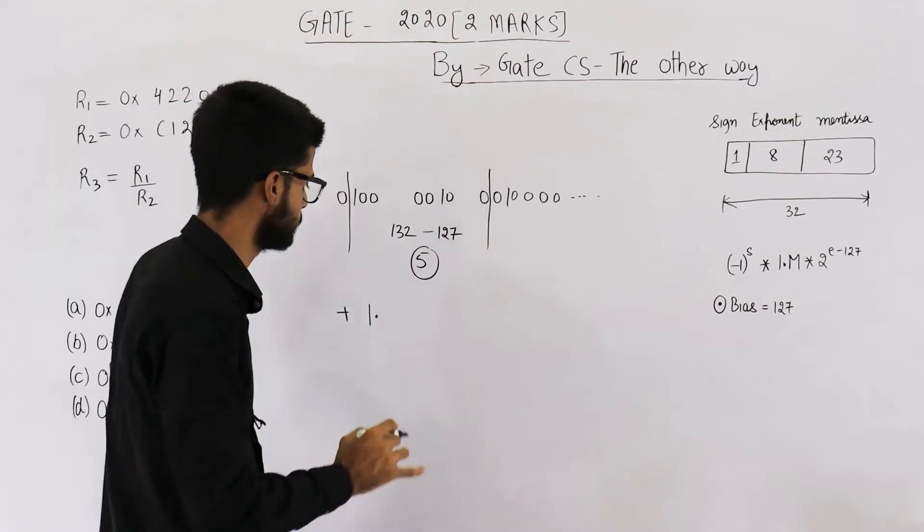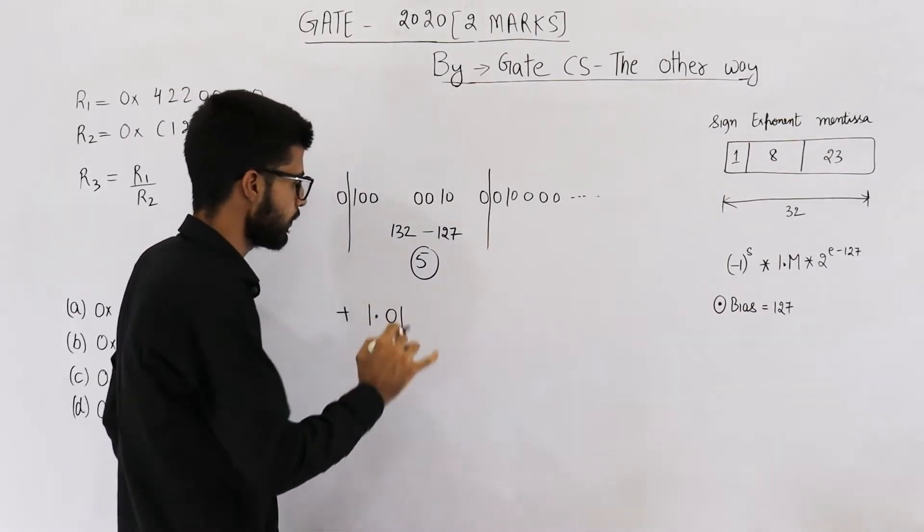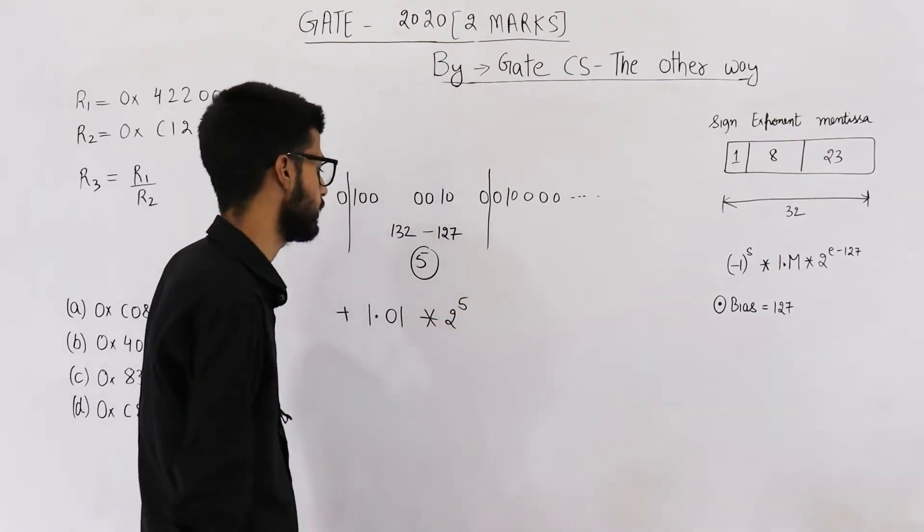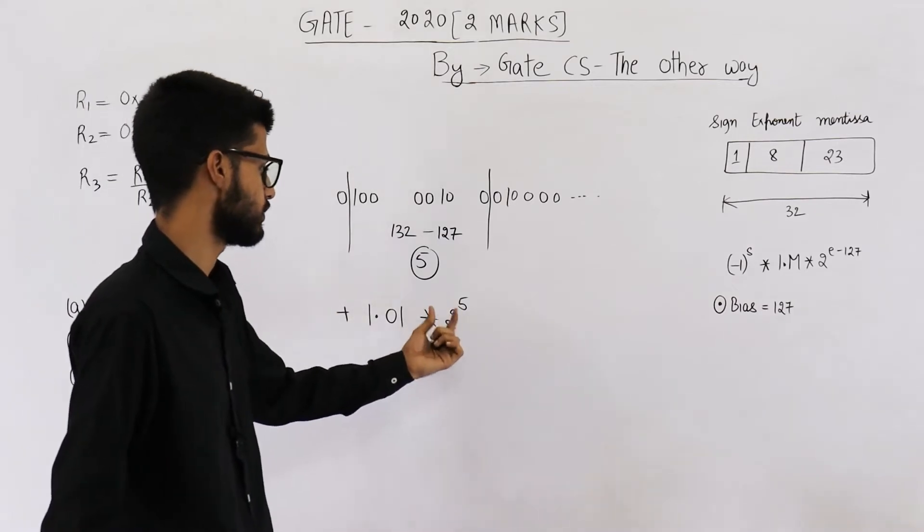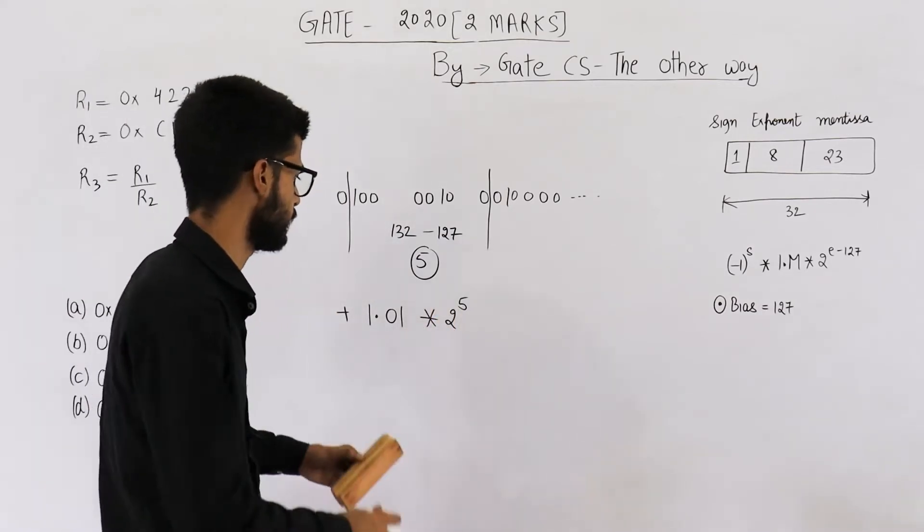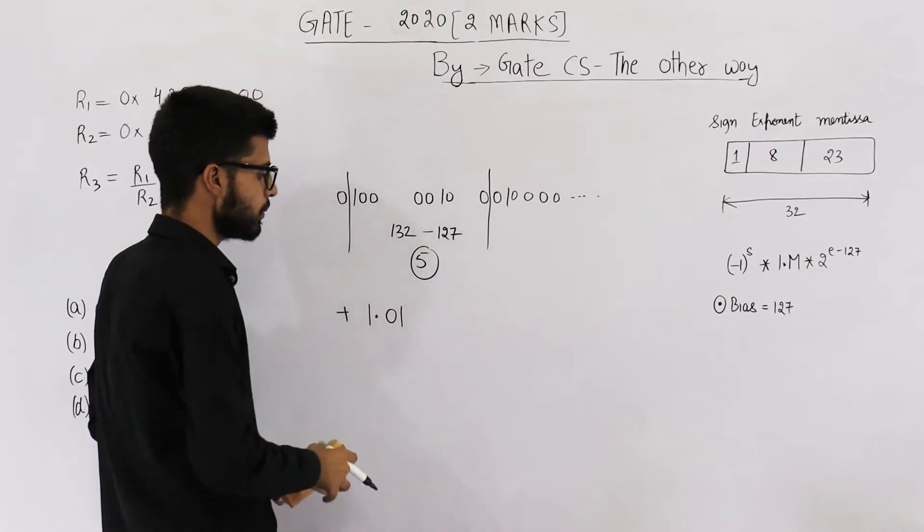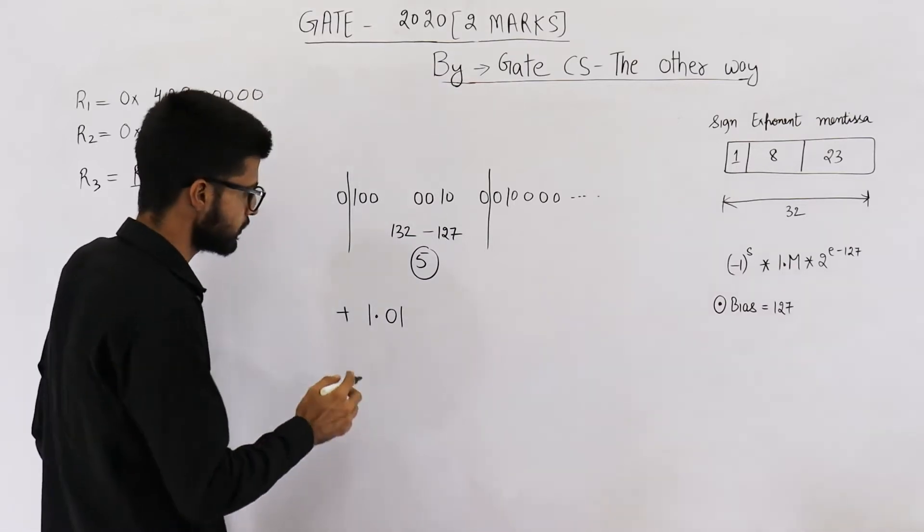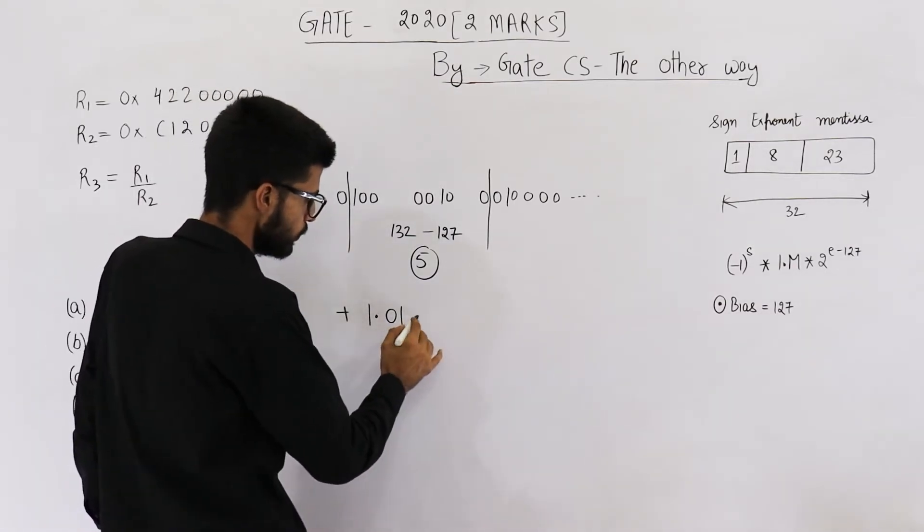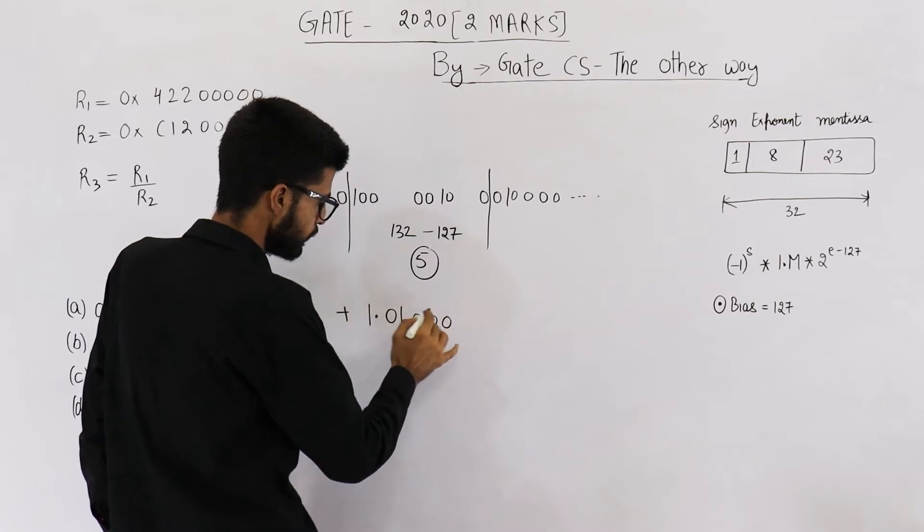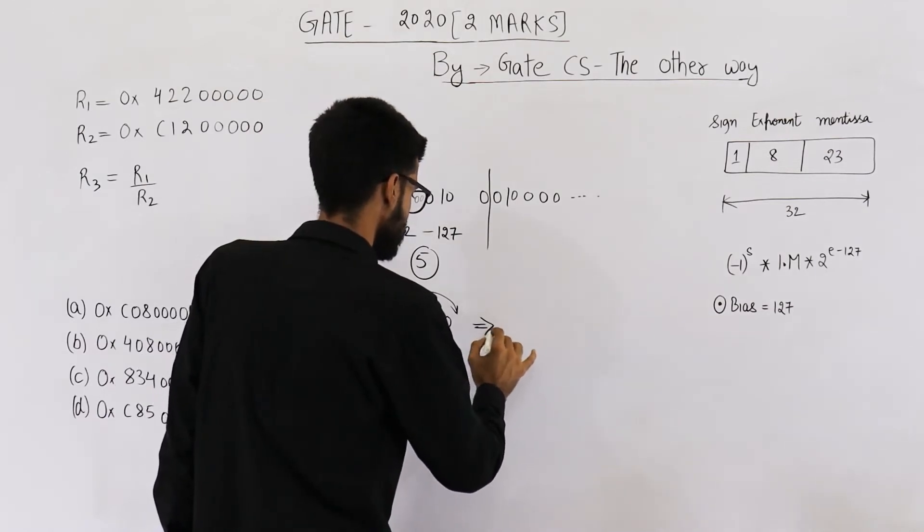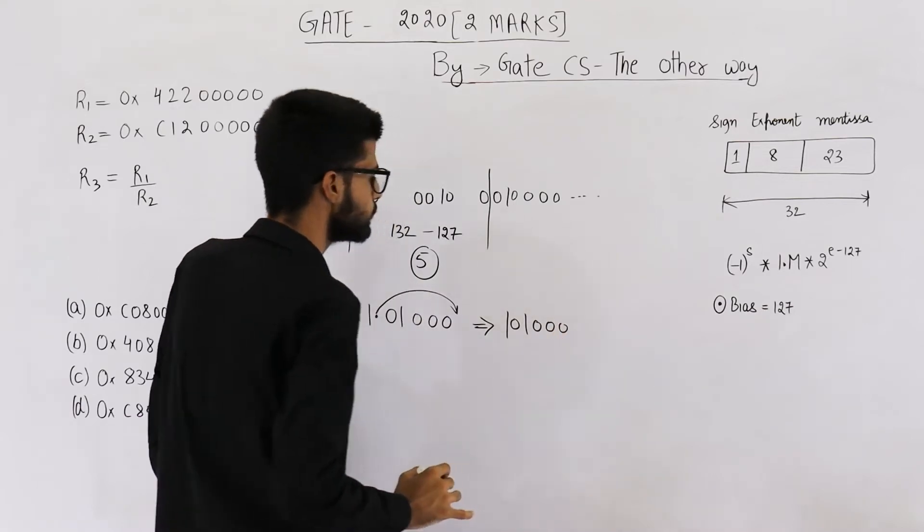This comes out to be 5. So this number will be positive 1.01 into 2 raised to the power 5, the actual exponent. Now let us resolve this. Two raised to the power 5 can be resolved by shifting this radix point to the right side by five bits. So move this radix point here.